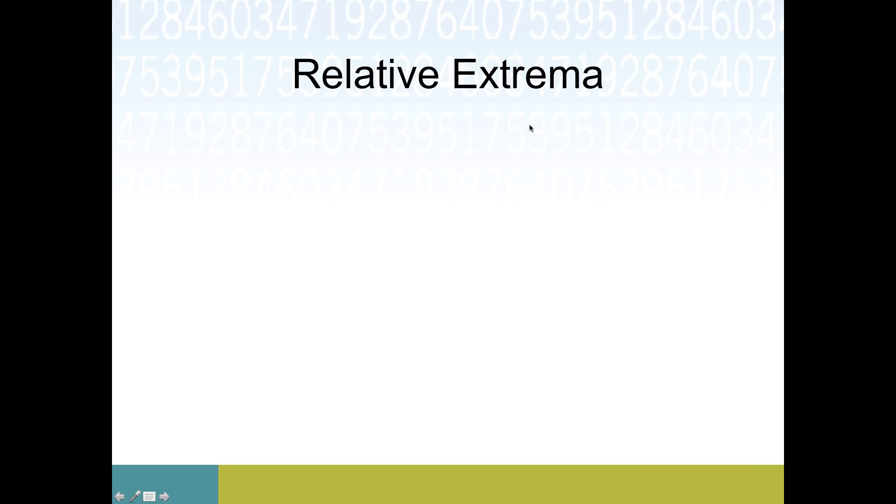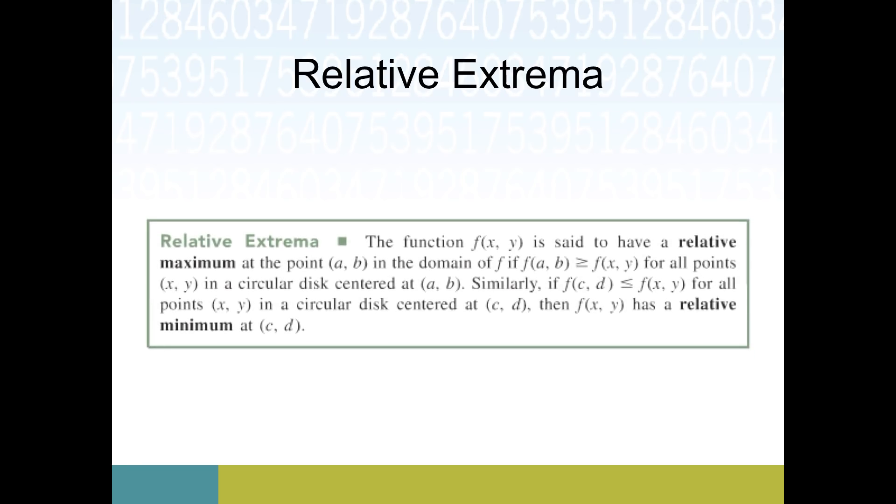So relative extrema. This particular term ought to sound familiar to you if you've done your optimization with functions of one variable. The principle is basically the same for functions of two variables. The singular is extremum, and the plural is extrema. This is a fancy word for max or min. We're trying to be efficient with this, saying it could be either, so we'll come up with one word to mean the situation where we either have a maximum or a minimum.